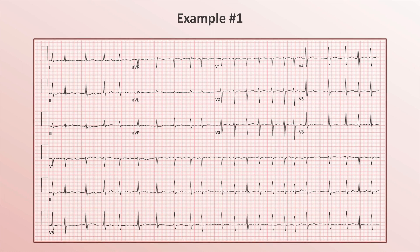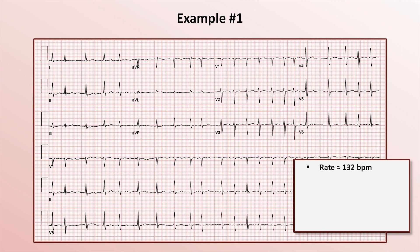Here's example 1. Using the 10-second rule, we can count 22 QRS complexes across the 10-second rhythm strip, which we then multiply by 6 to get a rate of about 132.